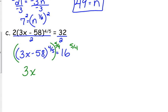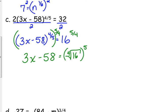You raise it to the reciprocal power because 4 fifths times 5 fourths is 1. So we have 3x minus 58 is equal to, and I'm going to go ahead and write this in radical form because I've got to evaluate that number right there. The fourth root of 16 raised to the fifth. Now, here's where we have to be careful. The fourth root of 16 is 2, but we have two possibilities. It can be positive 2 and it can be negative 2.